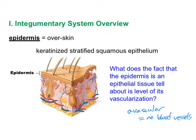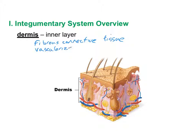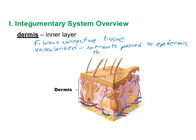The second layer going inward is the dermis, which is the inner layer. Because it's not forming a border, it's a connective tissue composed of fibrous connective tissue. Because the dermis needs to support the overlying avascular epidermis, it is heavily vascularized, which is one reason we bleed when injured. This vascularity allows nutrients to be passed to the epidermis through diffusion.